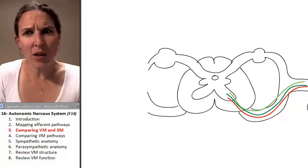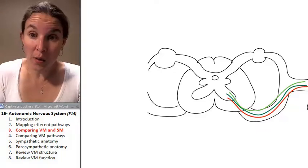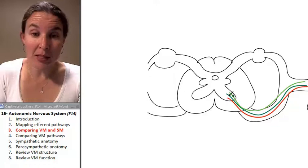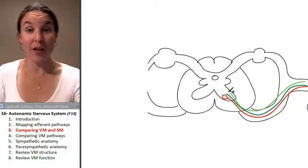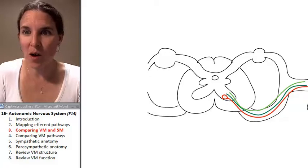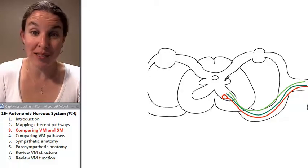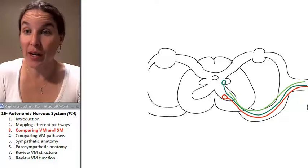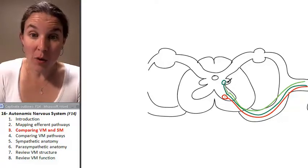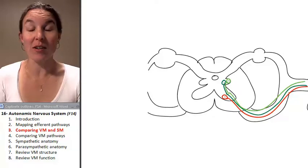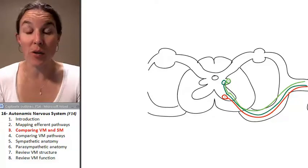Where are the cell bodies though? Well, we know that the somatic motor cell bodies are in the anterior gray horn. What do we know about visceral motor cell bodies? We know that they're in the lateral gray horn. We know both flavors of visceral motor cell bodies are found in the lateral gray horn.